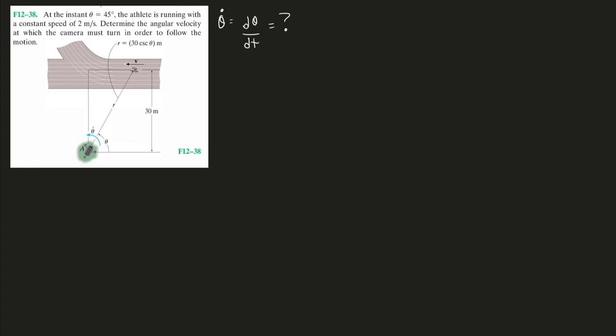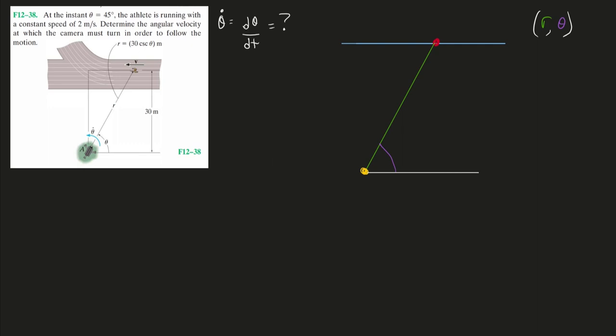Since I know they want that, I definitely know this is going to be a polar coordinate situation. So here's my runner, and I know that he is running to the left. At this instant we know his speed, not only at this instant, we know that he has a constant speed of 2 meters per second.